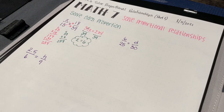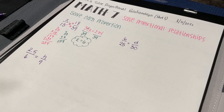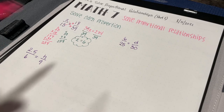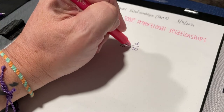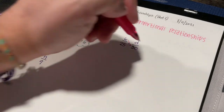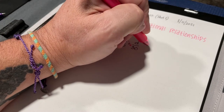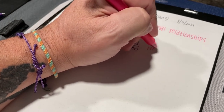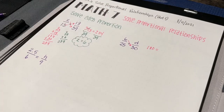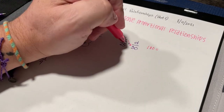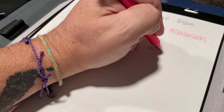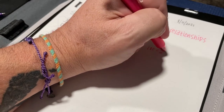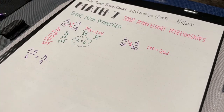Let's look at the next problem, going through the same process. Cross products: 6 times 30 is 180, and that equals 25 times d, which is 25d.